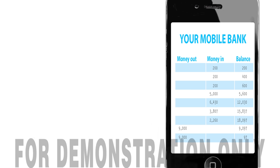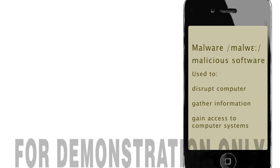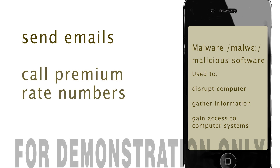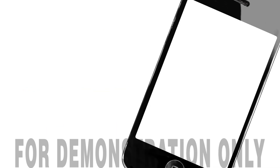Criminals can infect mobile devices with malware — malicious software — just as they do with computers. And malware can do all sorts of things. It can take over your contacts list and send everyone emails, make your phone ring a premium rate number without you knowing, or capture what you tap onto your keypad and then send this to the hackers.